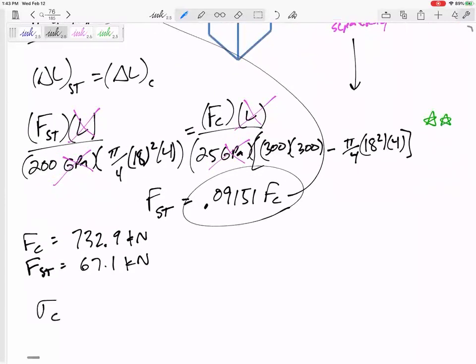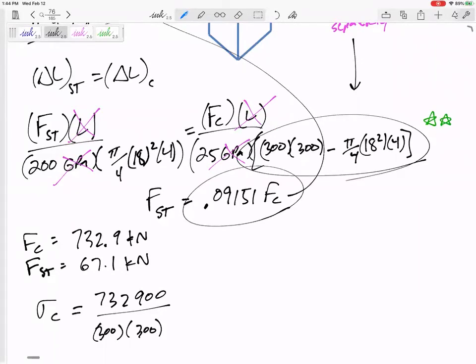So let's make sure I answer the stress in the concrete, 732,900 over the area of the concrete, whatever that area is, 300 by 300, 90,000. Divide it by the area of the concrete. So that would be 8.24 MPa.